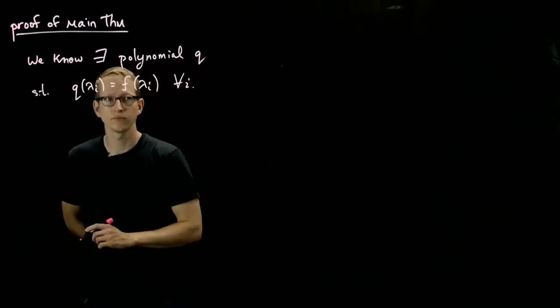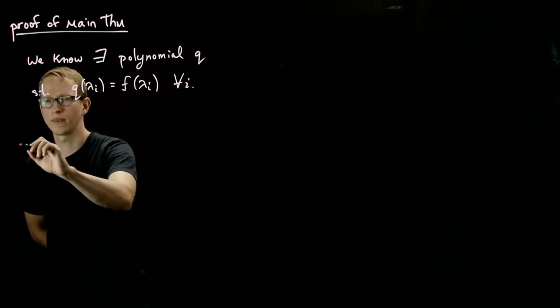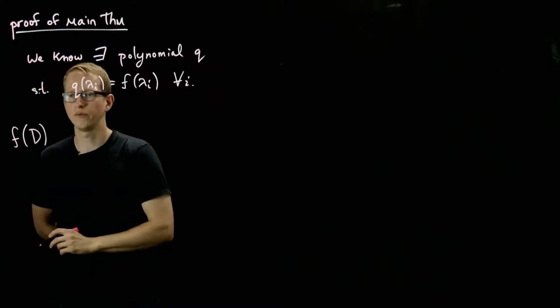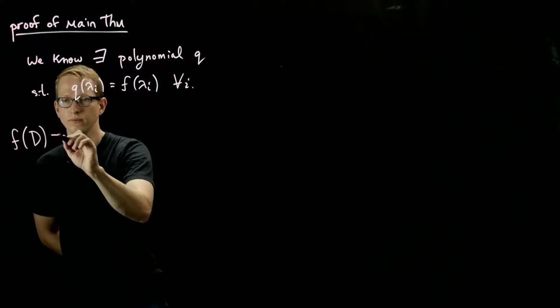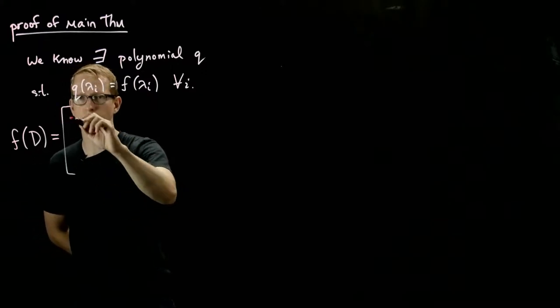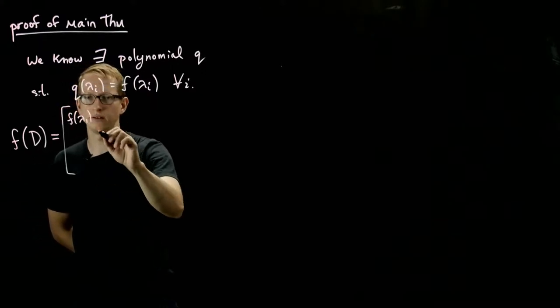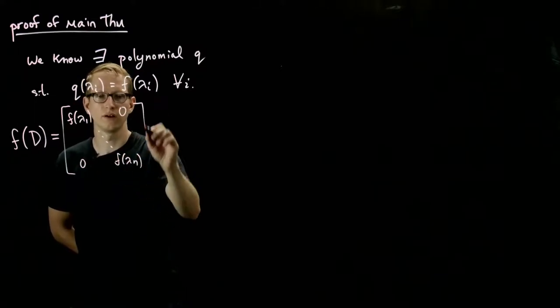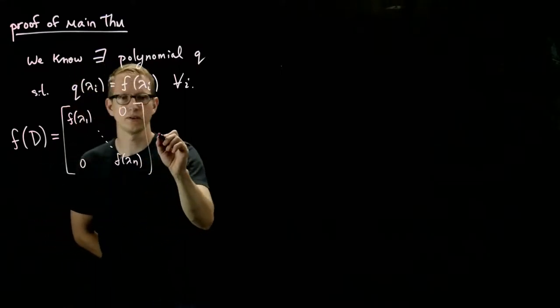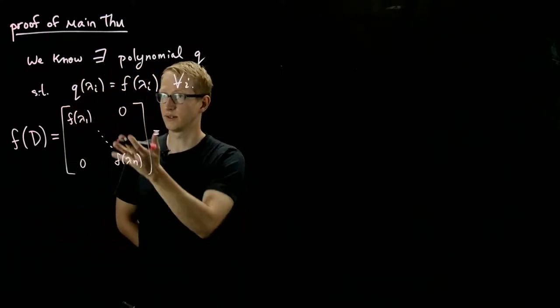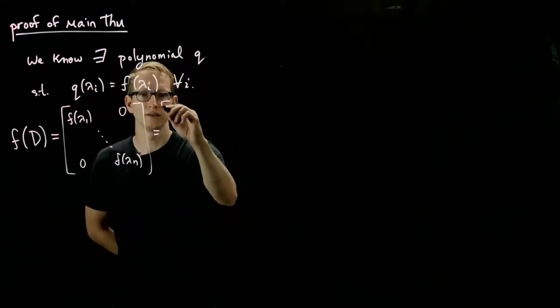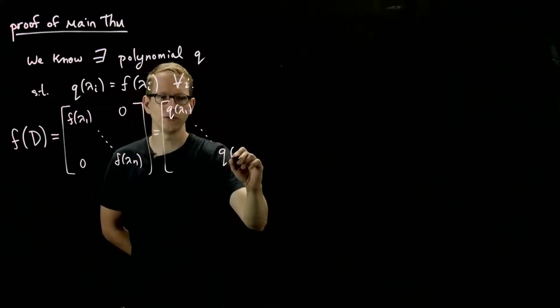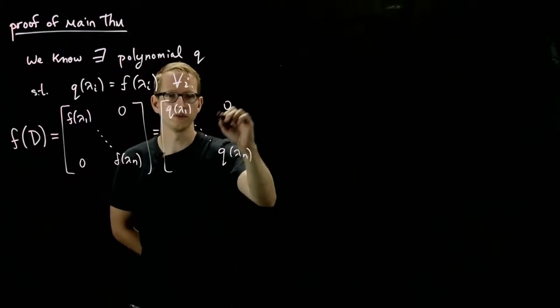Of that matrix. Therefore, if we compute f of D, which was defined to be f of lambda 1 to f of lambda n of our diagonal matrix D, then this is the same exact thing as q of lambda 1 to q of lambda n with 0 everywhere else.